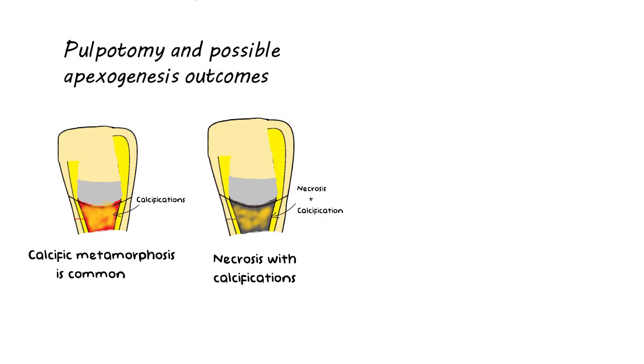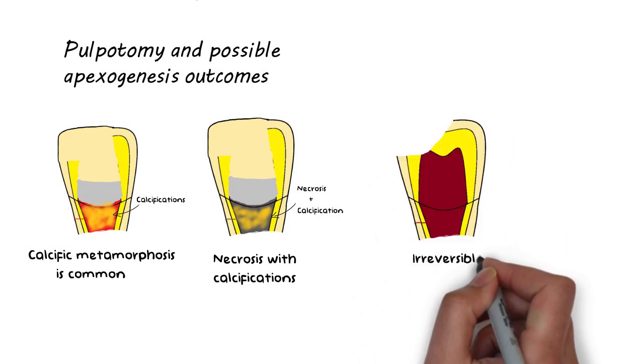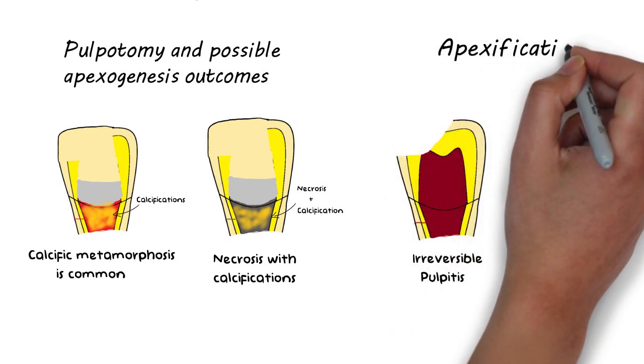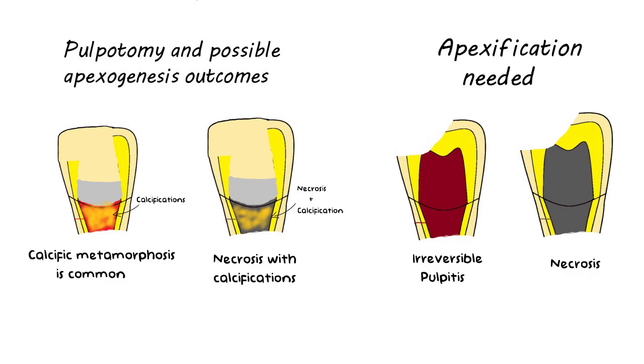If it is determined that pulp has become irreversibly inflamed or dead due to necrosis before the root could complete development, then Apexification must be initiated at this stage. I will talk more about Apexification in my later videos.